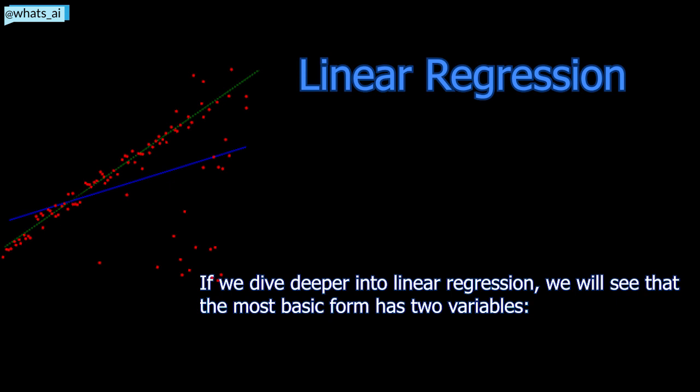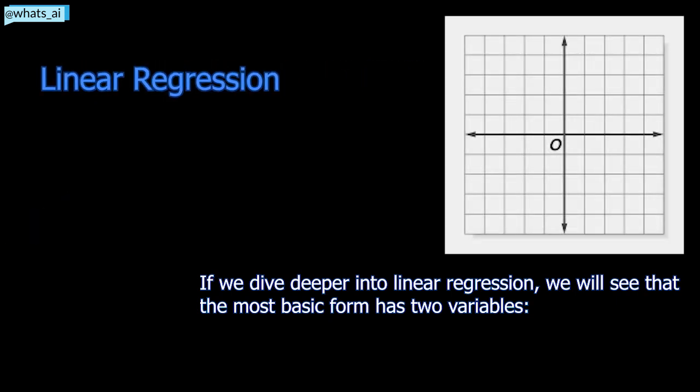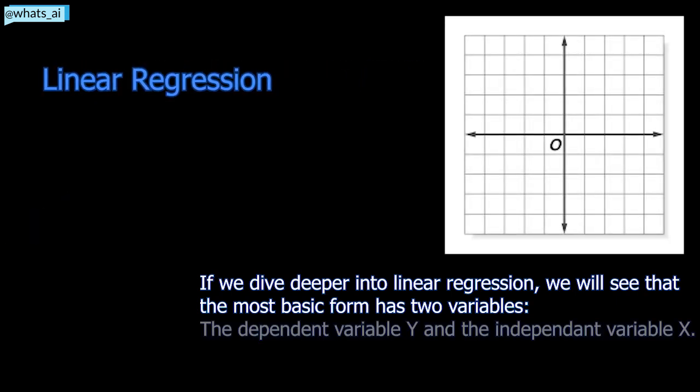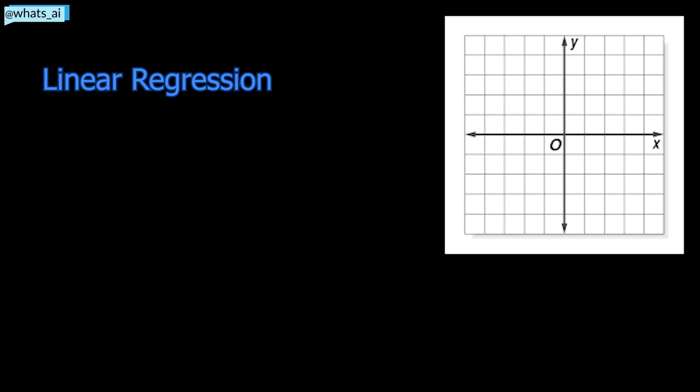If we dive deeper into linear regression, we will see that the most basic form has two variables: the dependent variable y and the independent variable x. You can see it as the equation of a line, which is y equals mx plus b